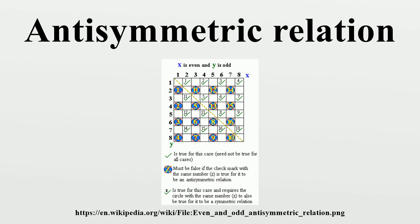Similarly, the subset order on the subsets of any given set is antisymmetric. Given two sets A and B, if every element in A also is in B and every element in B is also in A, then A and B must contain all the same elements and therefore be equal.